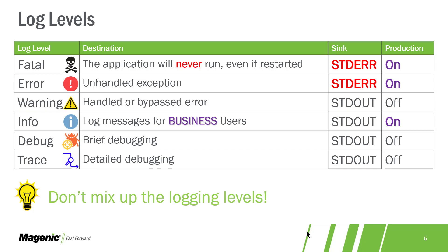Versus errors — these are things that happen at runtime: try to go talk to my file system or SQL server and it didn't work. So I'm going to log the error so we know what happened. And if I'm clever, I have some resiliency and retry policies in place, and if those fail, my process will take a little nap and try again. Warnings are things we put in the code to say this happened and we handled it, but it's weird and you should probably look at these from time to time. Info are log messages specifically for business users, and debug and trace are for developers at two different levels of granularity. Don't mix these up.